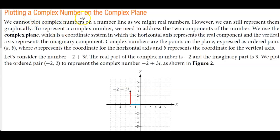Plotting a complex number on the complex plane. We cannot plot complex numbers on a number line as we might real numbers. However, we can still represent them graphically. To represent a complex number we need to address the two components of the number. We use the complex plane, which is a coordinate system in which the horizontal axis represents the real component and the vertical axis represents the imaginary component.